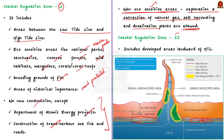Moving on to CRZ 2 — highlighted in orange in the image — this includes areas landward of the high tide line that are already developed. The crucial point is it includes areas that are landward of the high tide line, so it extends from the sea towards the land. A developed area refers to areas within municipal limits or other legally designated urban areas which are already substantially built up.